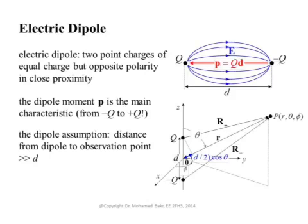We'll now derive an expression for the electric field and the potential resulting from these two charges. We put the dipole along the Z-axis, so the dipole moment is pointing along the positive Z-axis. Its magnitude is QD, where D is the separation between them, and each charge is separated by D over 2 from the origin.